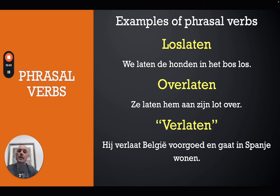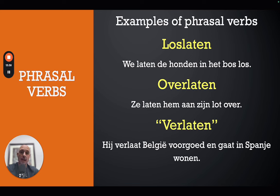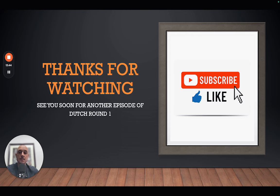Finally, 'verlaten' also means 'to leave,' but it's a tricky one because it's not a separable verb. For example, 'hij verlaat België voorgoed en gaat in Spanje wonen' — 'he leaves Belgium forever and is going to live in Spain.' Notice that 'verlaat' stays together — it does not split — which confirms it is not a separable verb.